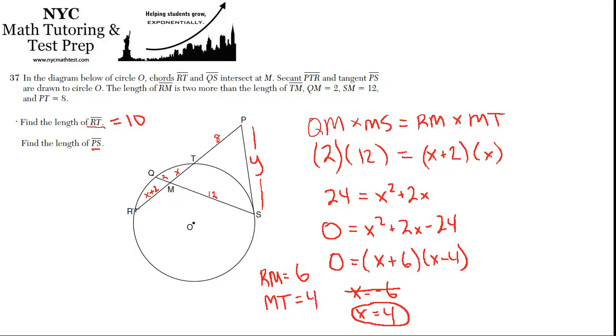Where the length of the secant, RP, as compared to the length of the tangent, PS, is equal to the ratio of PS to the part of the secant that falls outside, PT. So I'm going to write that down symbolically for you. So the whole length of the secant, RP, is to the tangent, PS, as PS is to the part of the secant that falls outside of the circle, which is PT.